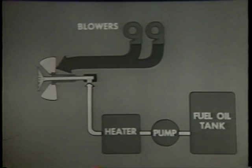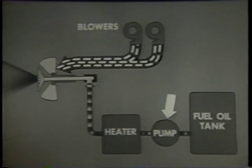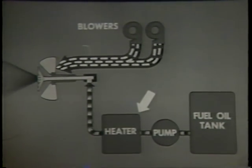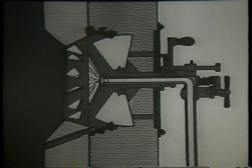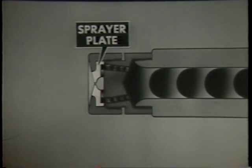The forced draft blowers send a strong blast of air to the burner. The fuel oil pump sends the oil through the heater where the oil is heated to give it good flow quality, then the oil is pumped to the burner. This simplified cutaway of the burner shows how the fuel oil is forced through the burner barrel to the atomizer nozzle, where a series of passages guide the oil to the sprayer plate. The sprayer plate makes the oil rotate at high speed, breaking up the oil into particles, and the oil leaves the atomizer as a hollow, mist-like cone or spray.